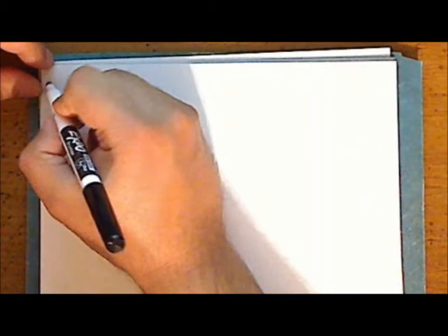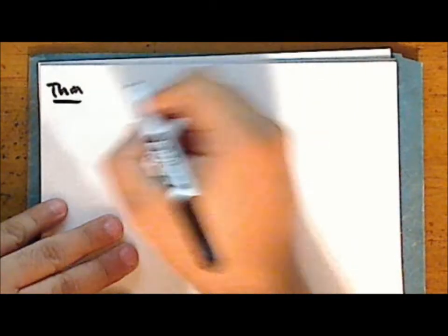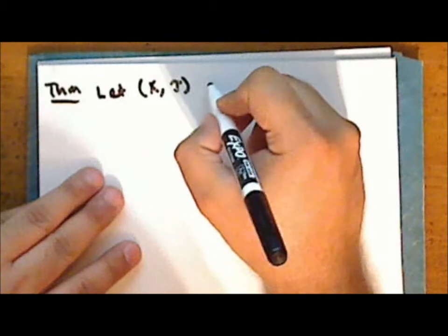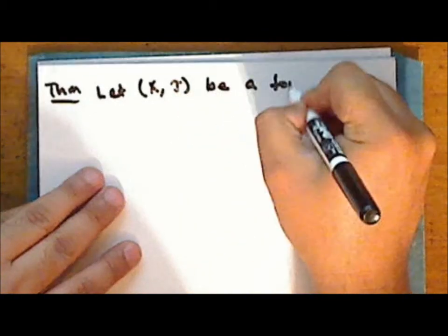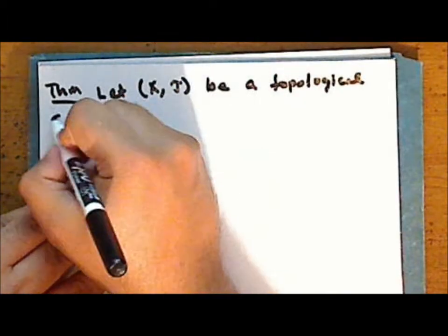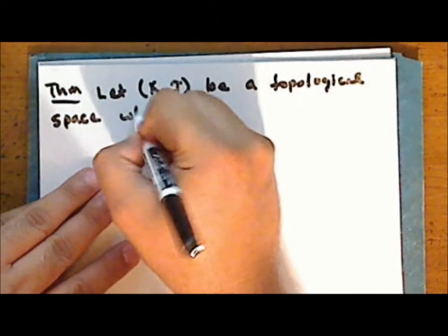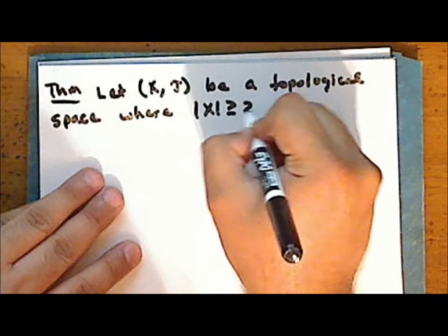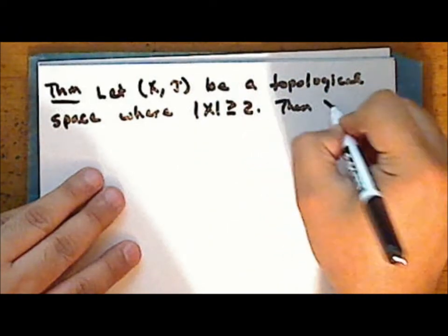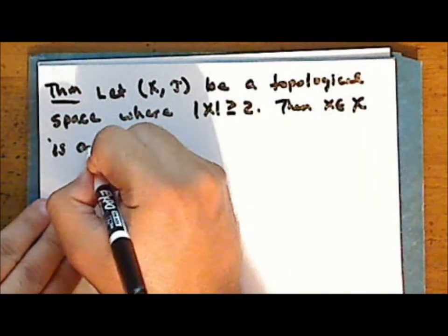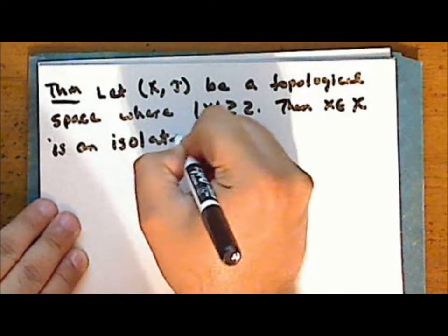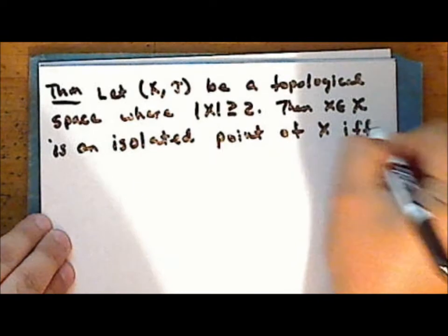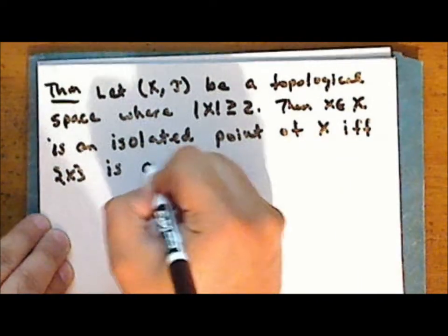So next we'll prove a theorem concerning isolated points in a given space. Let the set X together with the topology tau be a topological space, where the cardinality of the underlying set X is greater than or equal to 2. Then a point X in the space X is an isolated point of the space if and only if the singleton containing that point is an open set.